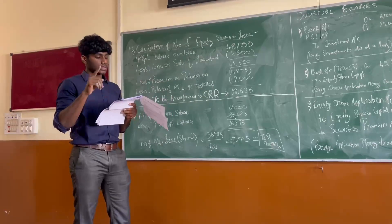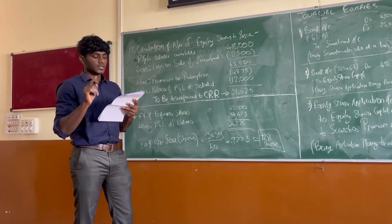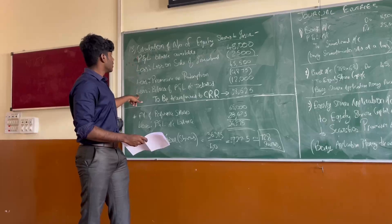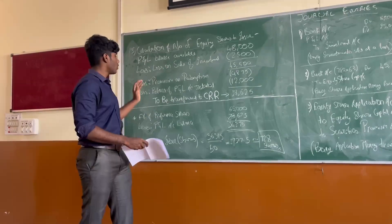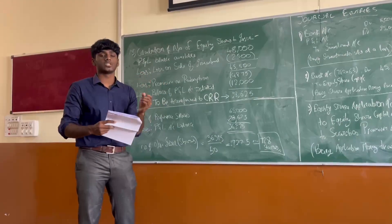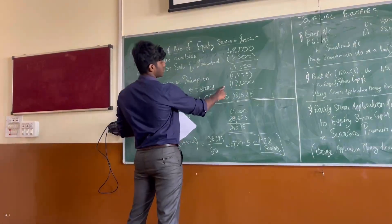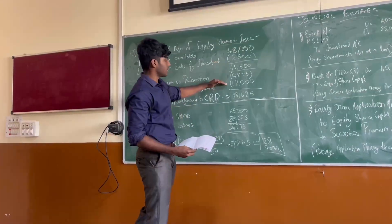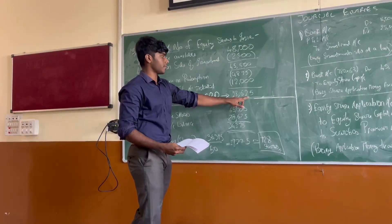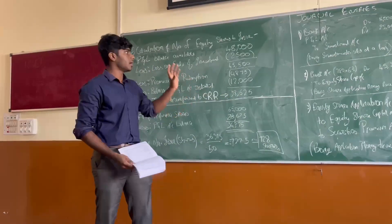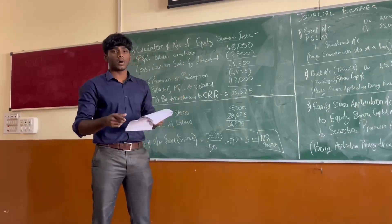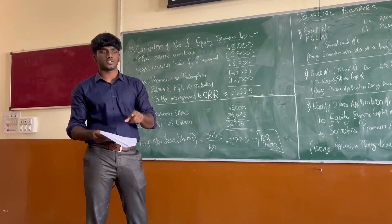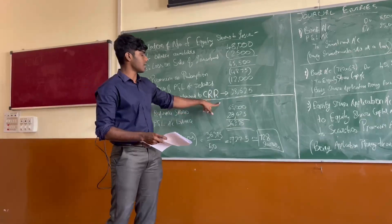The second sub-question asks us to leave a bank balance of 12,000. So before calculating the amount available for redemption, we also deduct the 12,000 which has to be retained. After all these deductions from 45,500, we arrive at 28,625. This is the general reserves amount available. As per the important accounting rule, this amount of 28,625 used from reserves will be transferred to Capital Redemption Reserve.